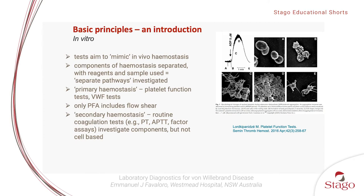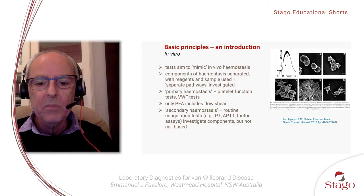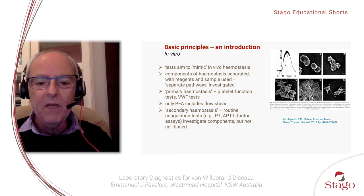In this second slide, I will talk a little bit about the basic principles in terms of in vitro. The tests that we perform in vitro act to try and mimic in vivo haemostasis. The components of haemostasis are separated out using particular reagents and the sample that we wish to test, and we investigate separate pathways of haemostasis. In primary haemostasis, we may assess platelet function or von Willebrand factor tests. The only in vitro test that includes flow shear, which is important in vivo, is the PFA.